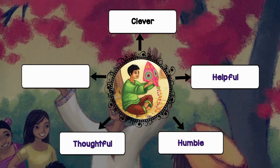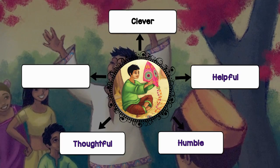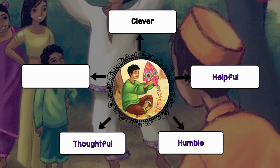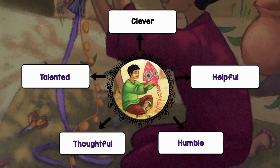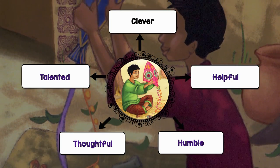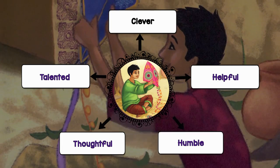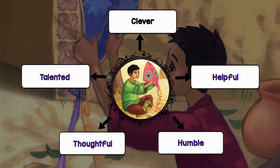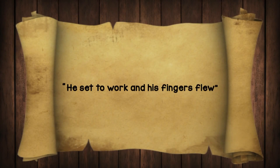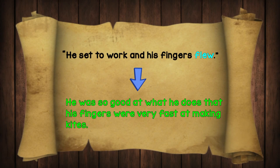Moreover, he is such a thoughtful boy — he wanted to make 12 kites for the bride to honour her on her wedding day. Can you imagine what a celebration it would be to have so many colourful kites in the sky? You can read this on page 12. Finally, I think he is a talented boy because of the way the writer wrote about his handicraft on page 10 — 'he set to work and his fingers flew.' The word 'flew' here doesn't literally mean his fingers flew away. It means he was good at what he does — that his fingers were very fast at making kites. That's why he is talented.